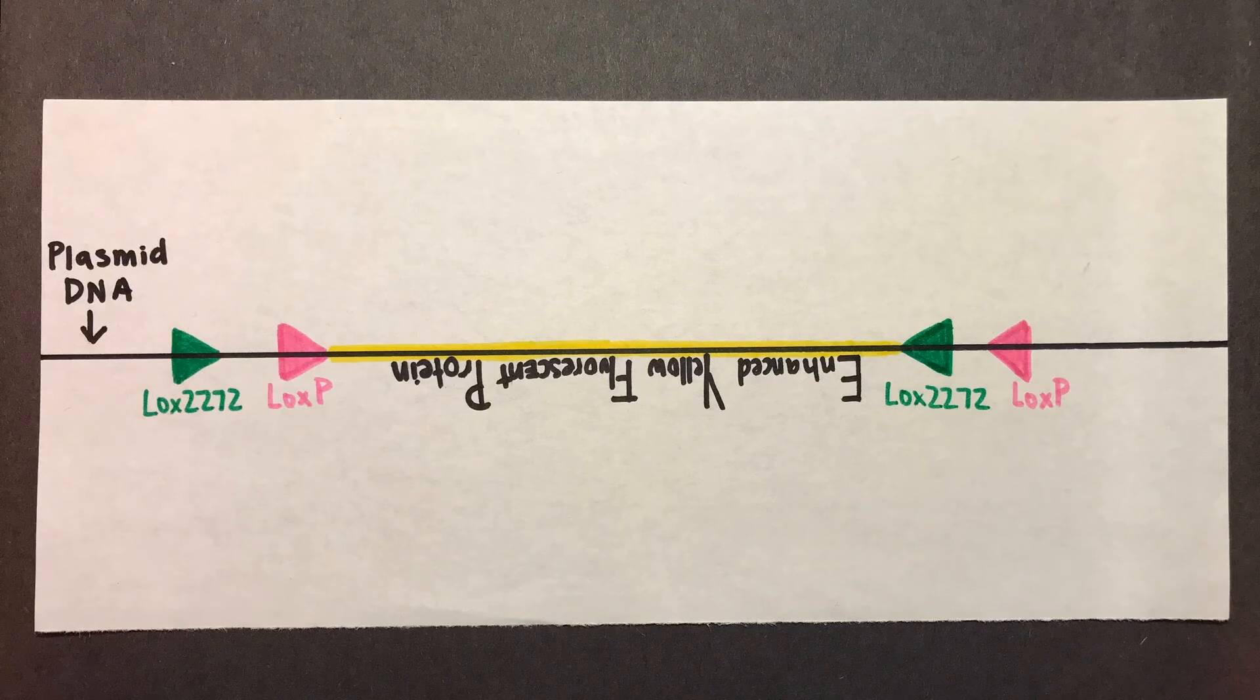This is an important tool for manipulating genes through deletion or inversion. Here we have a situation where our gene of interest, enhanced yellow fluorescent protein, will be inverted.